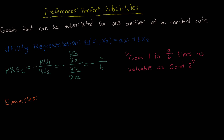The first example I'm going to go over is coffee and tea. We can think about cups of coffee and cups of tea, in which case let's say a consumer is indifferent between one cup of coffee and one cup of tea — they're both just as valuable to the consumer. In that case, we can set a equal to 1 and b equal to 1, so the utility function, as a function of coffee and tea, would just be xc plus xt.